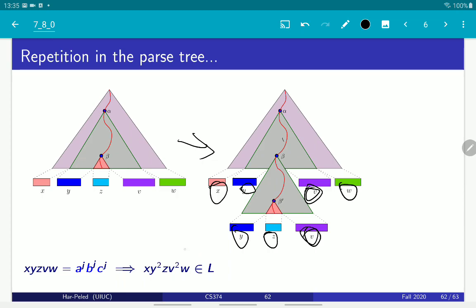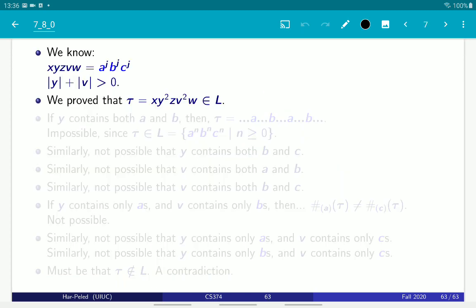And the important thing is that it's not possible that y or v are empty. If y and v are both empty, then we would not be generating this gray area. This would not be possible. This is where we are using the fact that we demand a minimal parse tree, because then we could have a smaller tree that generates the same string. So, it must be that either y or v or both, of course, are non-empty. And in particular, what we got is that there is a new string, this x y^2 z v^2 w, that is in the language. And now we just need to do case analysis to argue that this is not possible. This part is tedious, but it's not especially insightful. So, let's do it.